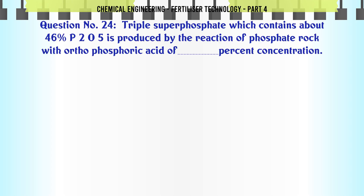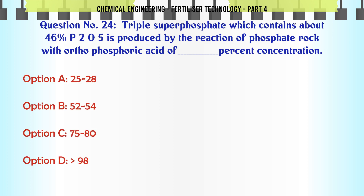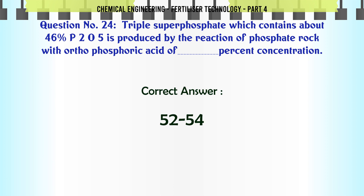Triple superphosphate, which contains about 46% P2O5, is produced by the reaction of phosphate rock with orthophosphoric acid of what percent concentration? a. 25-28%, b. 52-54%, c. 75-80%, d. 98%. The correct answer is: 52-54%.